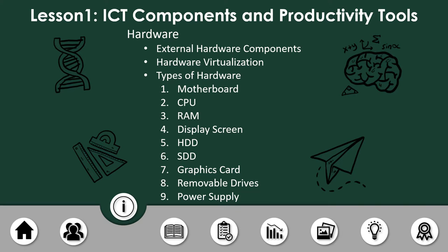Then we have the different types of hardware. We have the motherboard — this is the skeleton of your device, where all the important hardware components are attached and cannot be removed, because removing them would compromise the function of the device. Then we have the CPU, the brain of your device or computer. It has the microprocessor, which analyzes, functions, and passes all the commands that we input. Then we have the RAM, which is responsible for processing and storing special or important data for a certain application or system.